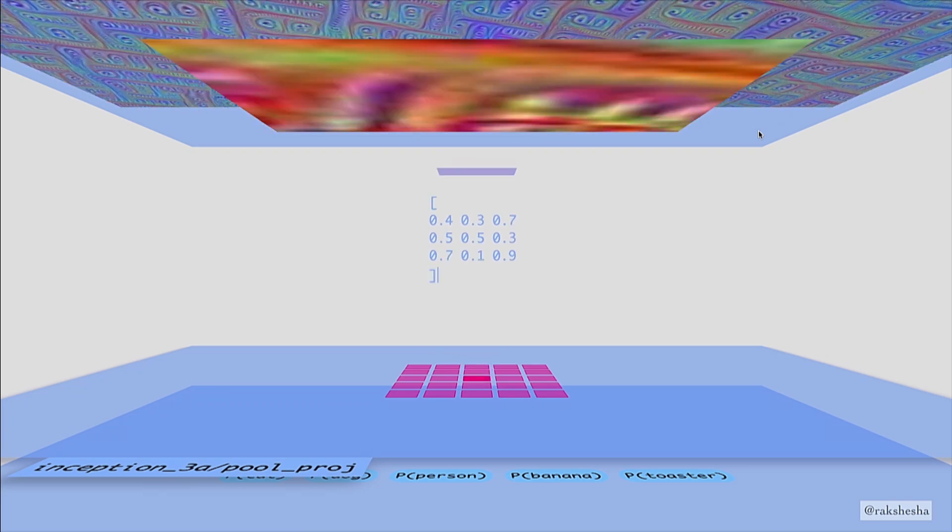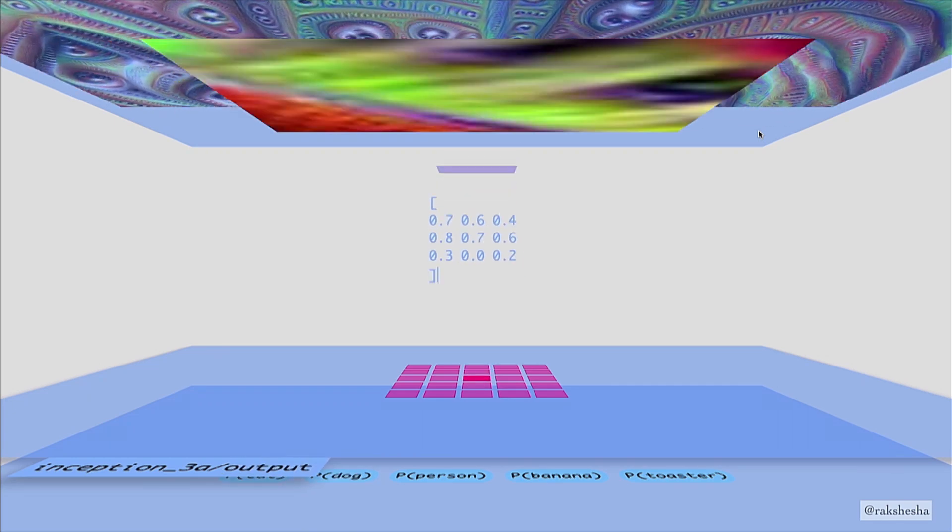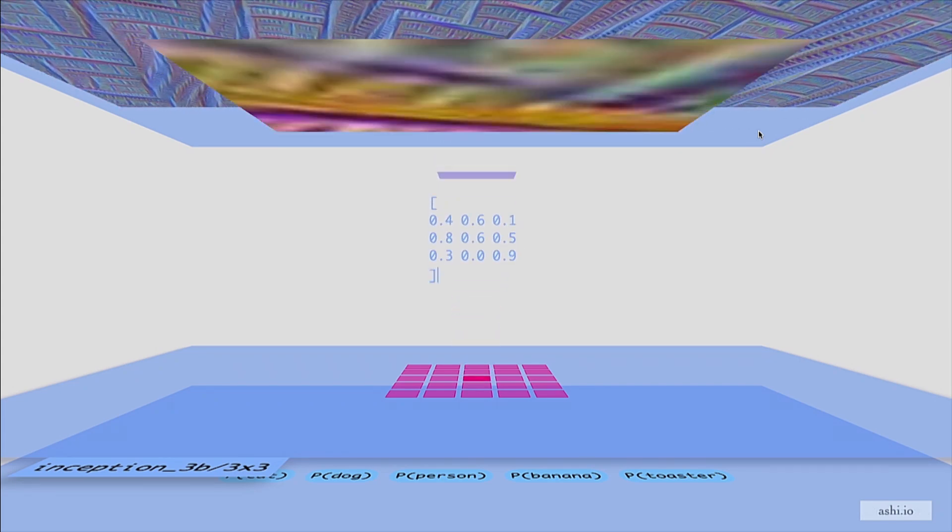Each neuron in a convolutional layer has a receptive field, some small patch of the previous layer that it's looking at. And each convolutional layer applies a filter. Specifically, it applies an image kernel. A kernel is a matrix of numbers, where each number represents the weight of the corresponding input neuron. So each pixel in a neuron's receptive field is multiplied by its weight, and then we sum all of them to produce the output neuron's value.